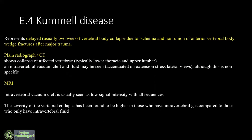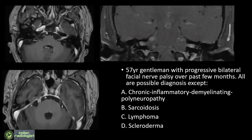Next question: a 57-year-old gentleman with progressive bilateral facial nerve palsy. All of the following are possible diagnoses except — 47 percent voted for option D, which is scleroderma, and that is the correct answer.